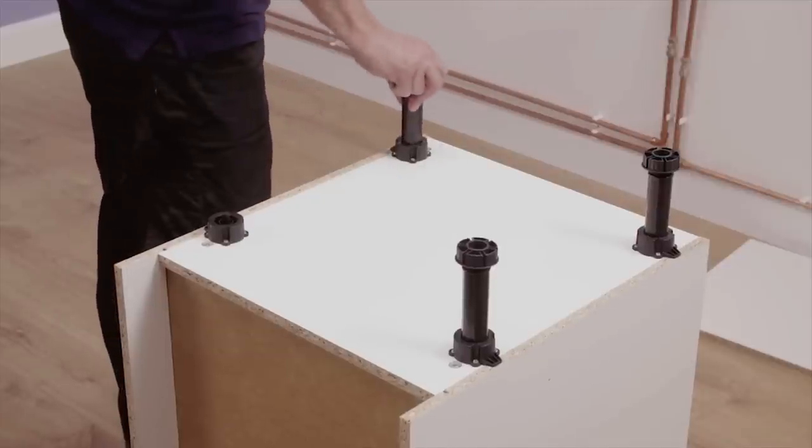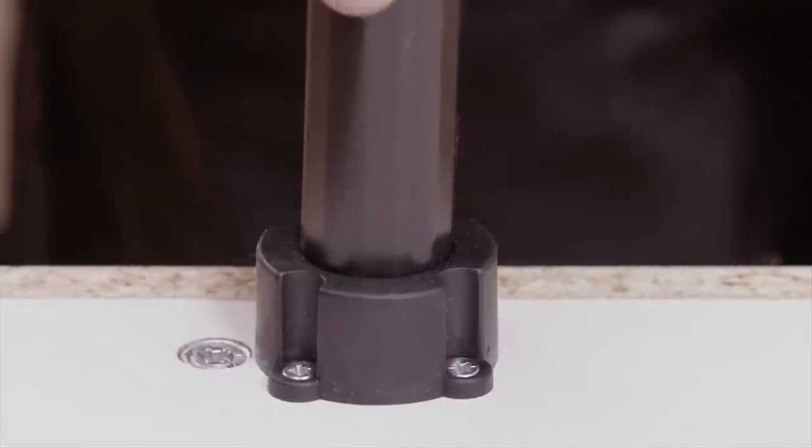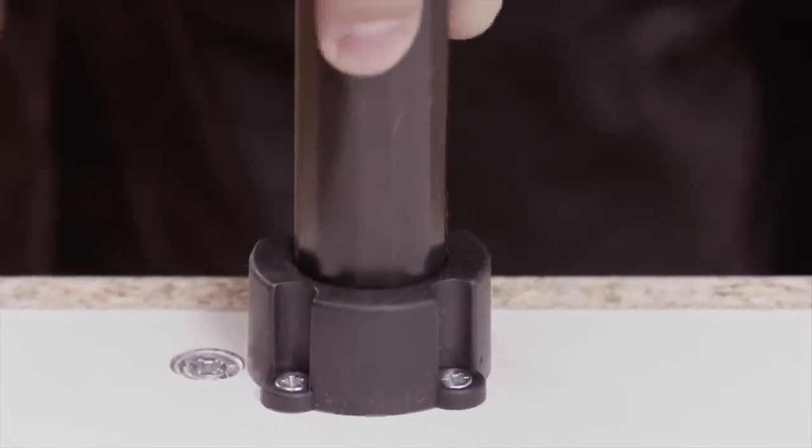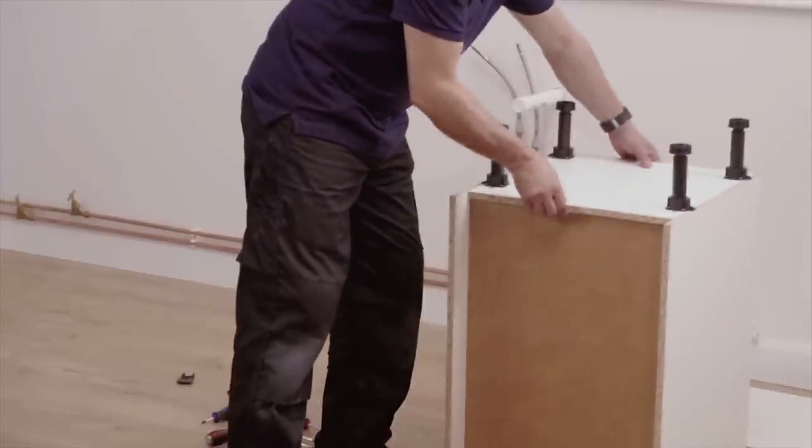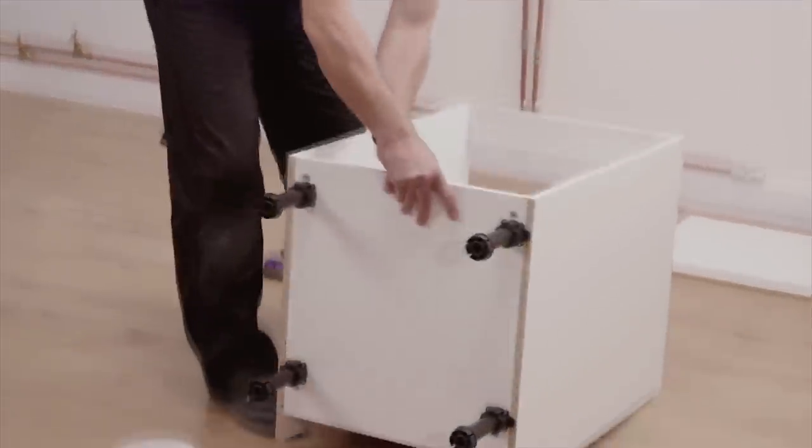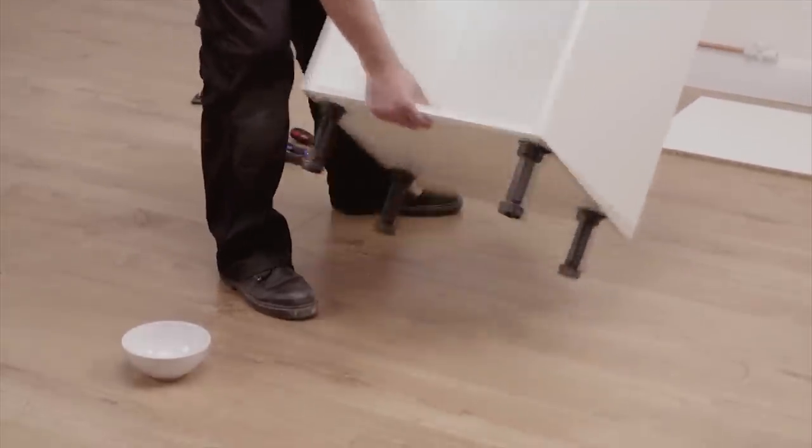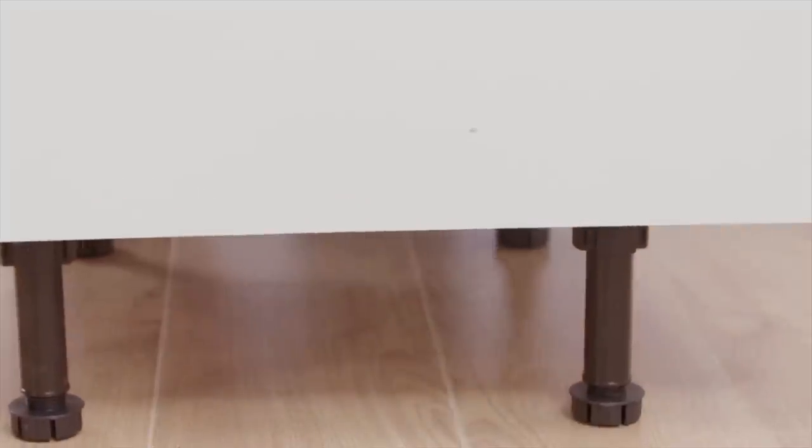Now, place the four legs into the sleeves. Then, turn the cabinet onto the legs, being careful as you rotate it not to put pressure on any of the legs at an angle.